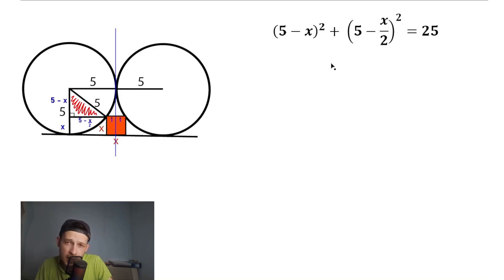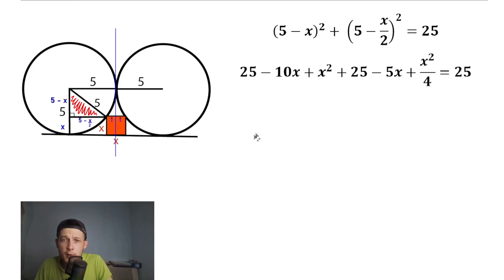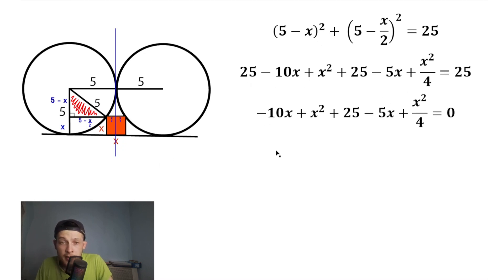We need to solve this quadratic equation. Let's open up our parentheses using the formula (a minus b) squared: we get 25 minus 10x plus x squared for the first term. Combining both expanded parentheses gives an expression equal to 25. We can cancel 25 from both sides, and as a result we have the expression without 25 on the left and right side.